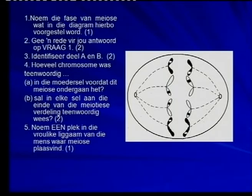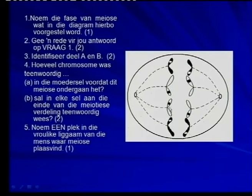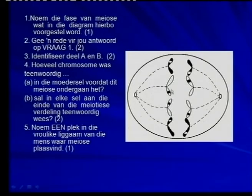This question was from the March paper. Which phase of meiosis is represented in that diagram? You must remember that chromosomes here are moving to opposite poles. These were chromosomes lined up on the equatorial plate, so we already passed meiosis one - this was meiosis two. Which phase? Anaphase two - because chromatids, or daughter chromosomes, are moving to the opposite poles.